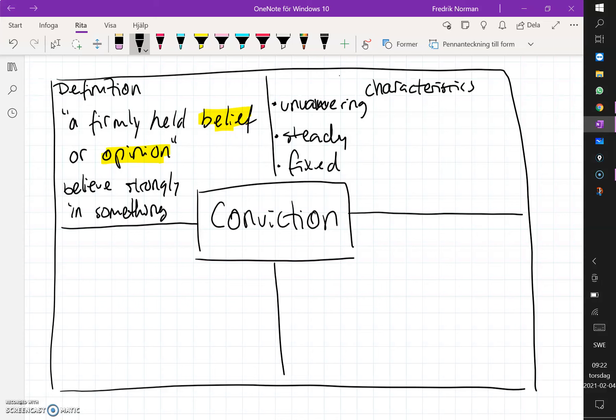Next, we go to the bottom left. Here, we want to give some examples. And when I think of conviction, I think of the belief, I think of the opinion, I think of that unwavering characteristic of the word. I think of someone who, let's say...